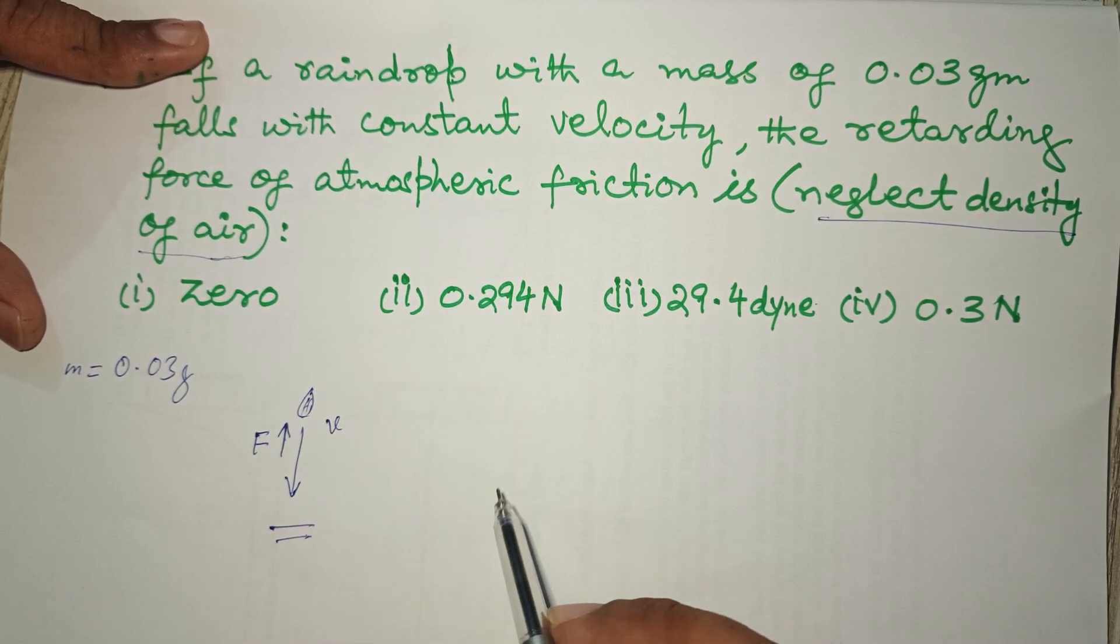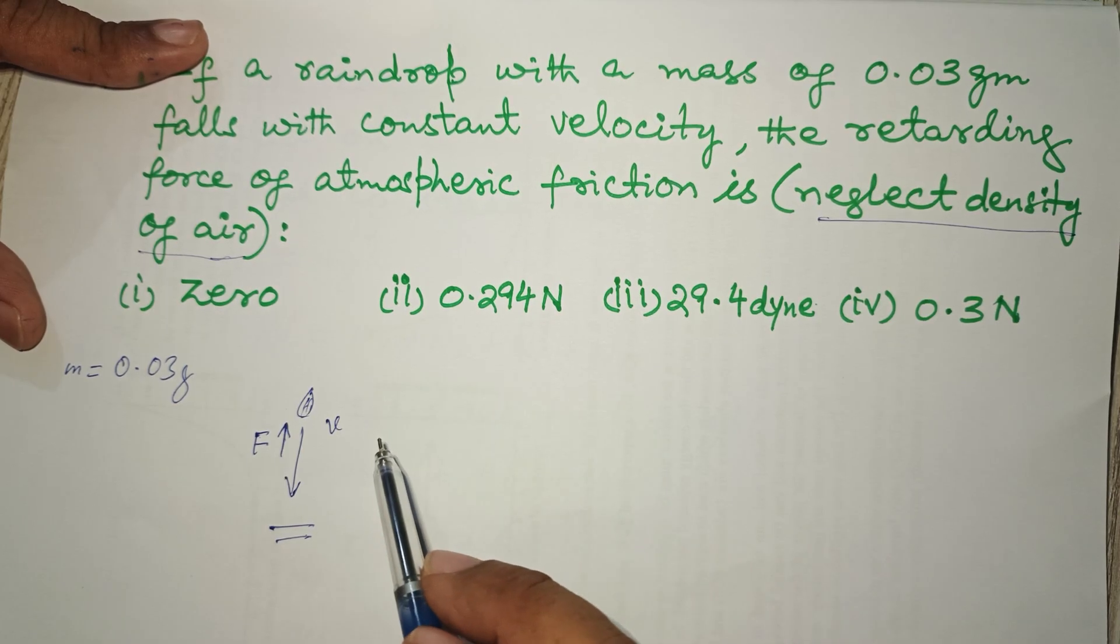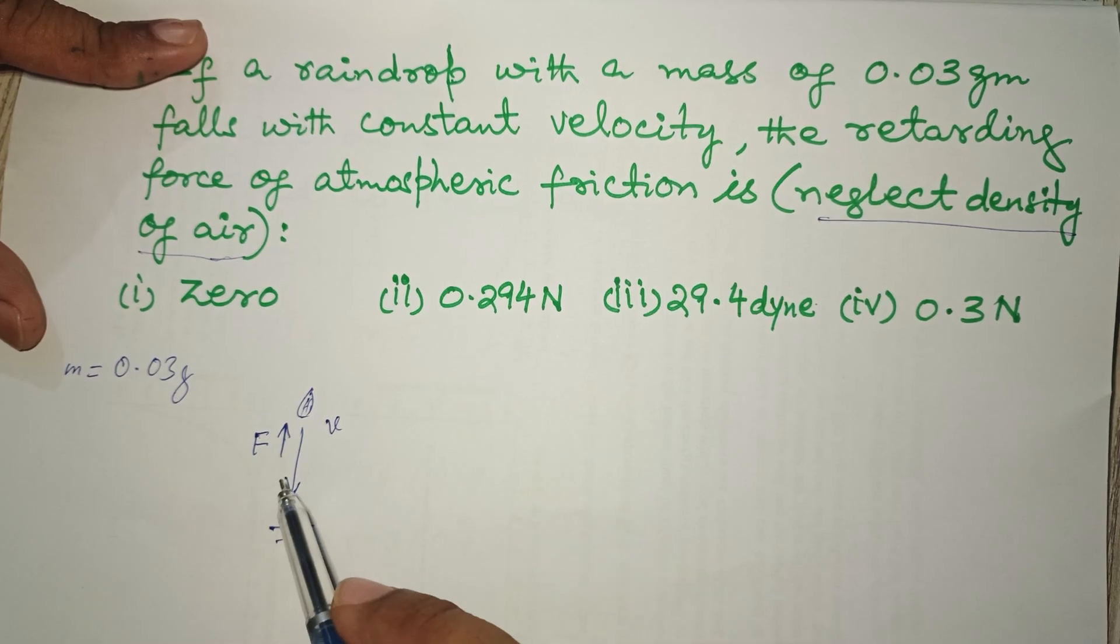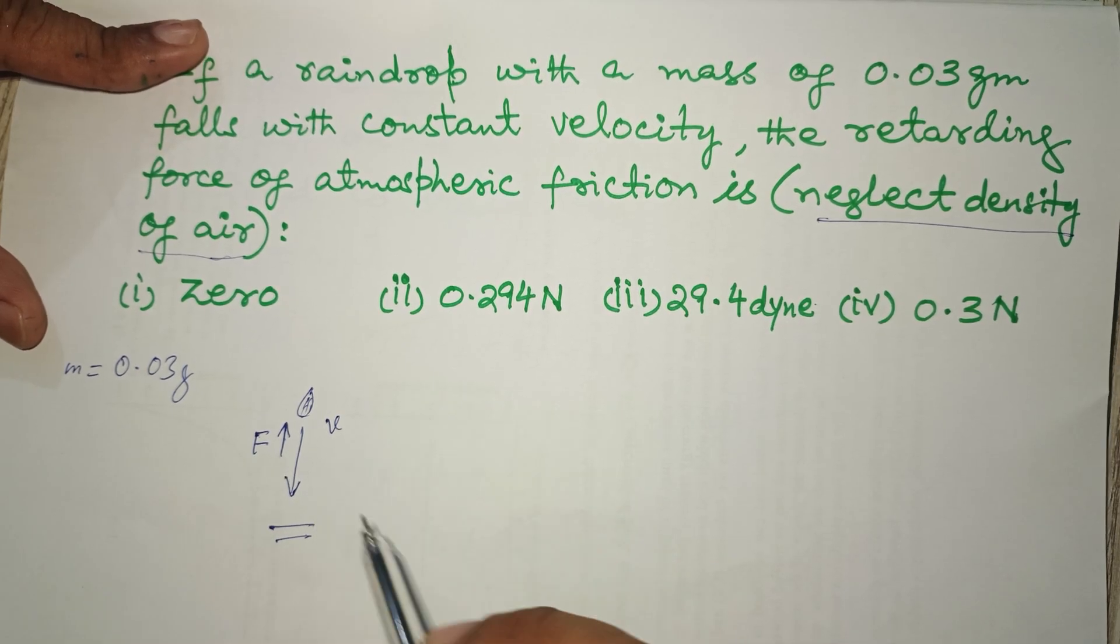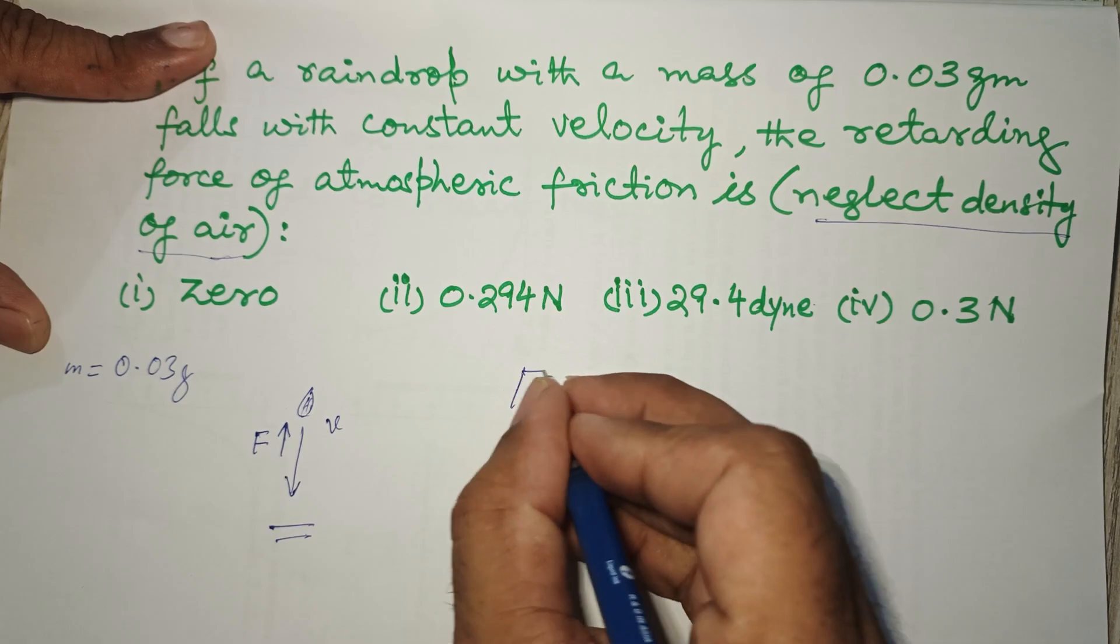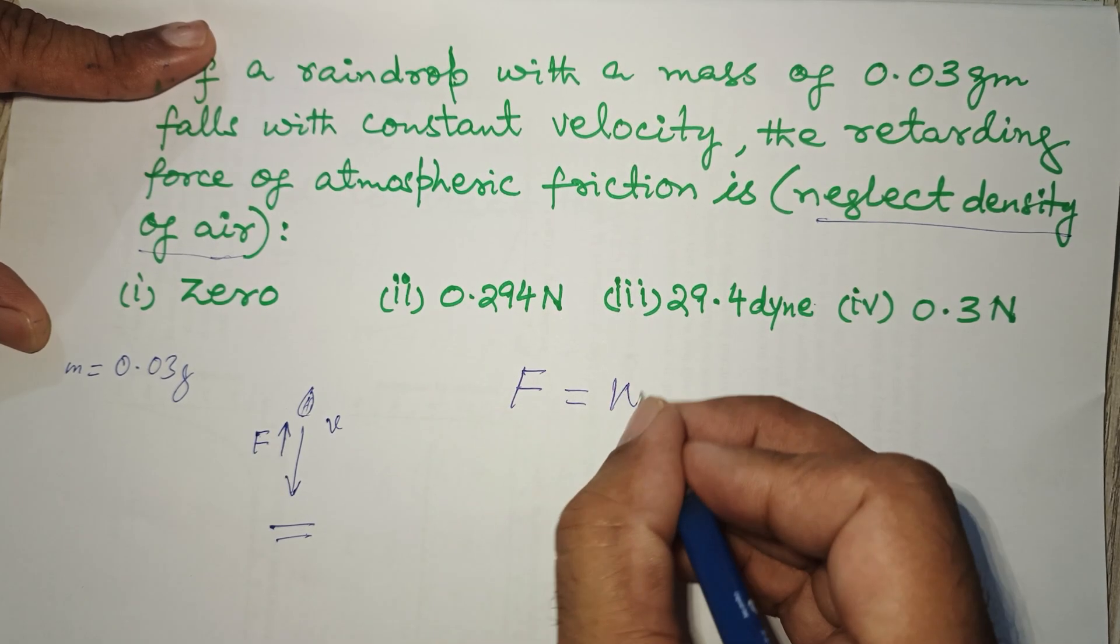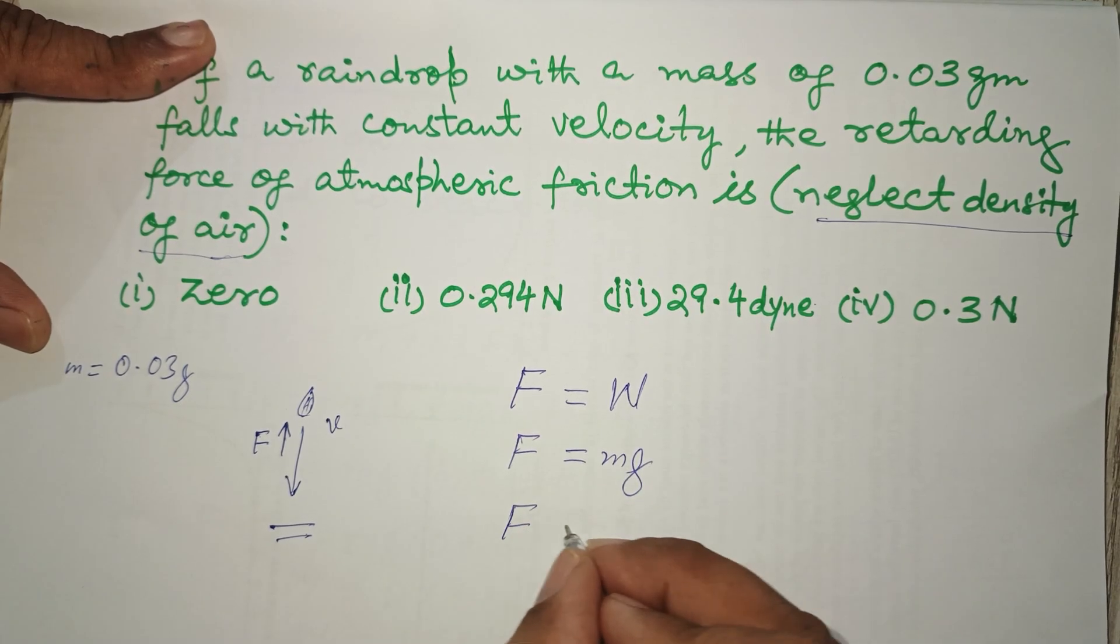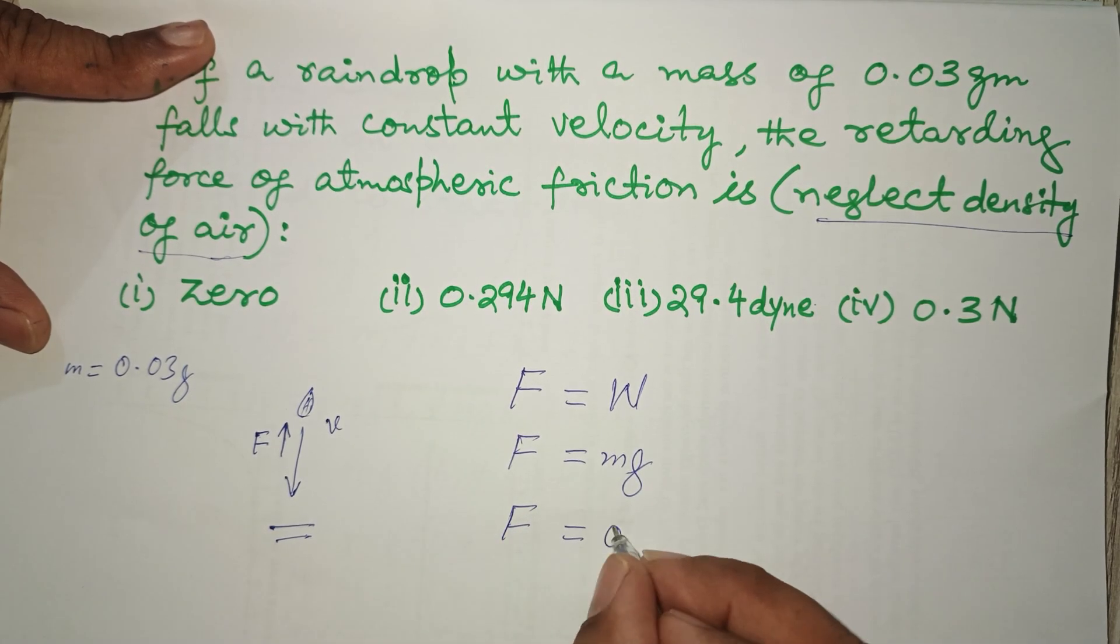When a raindrop or any object falls with constant velocity, it means that the weight of the body and the retarding force are equal. So in this case, F equals W, and W is mg. M is 0.03 grams.